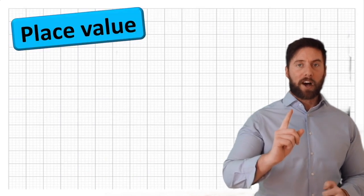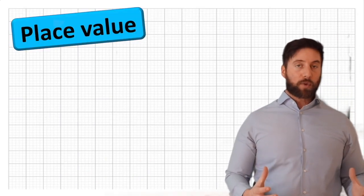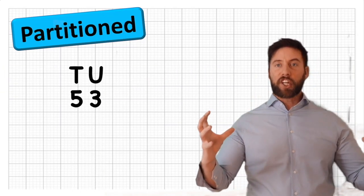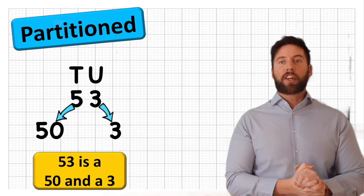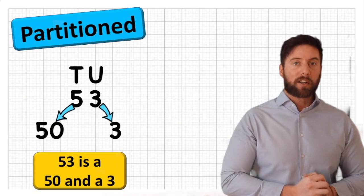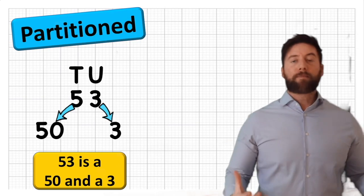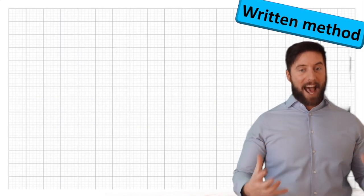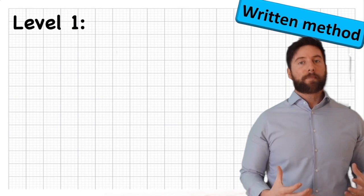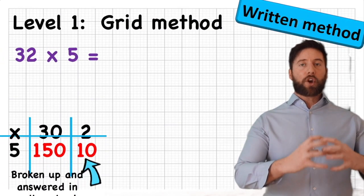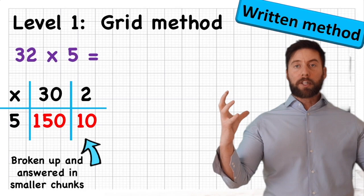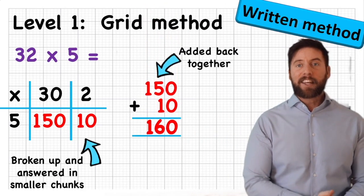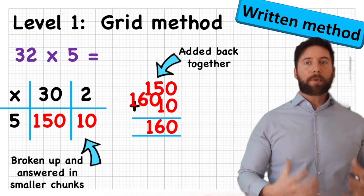Place value is really important to understand before we start, because we're going to use our understanding of place value to partition and break up our multiple digits into more manageable chunks that are easier to multiply. Let's review what we've done so far in previous videos. Our written method started with the grid method, which was really useful because it showed us what we're doing — breaking up those numbers and answering them in smaller chunks, then putting the number back together at the end to give us our final total.